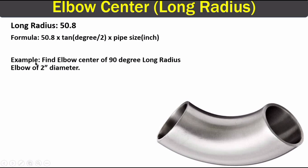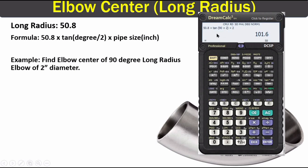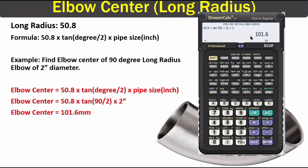Now let's solve a problem. We have a 90 degree long radius elbow with a diameter of 2 inches. Using the formula: 50.8 multiplied by 10, into 90 divided by 2, multiplied by 2 inches. The answer is 101.6 millimeters as the elbow center.